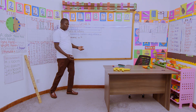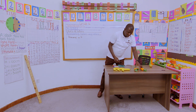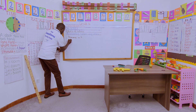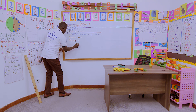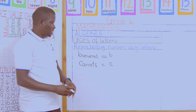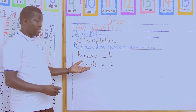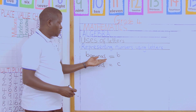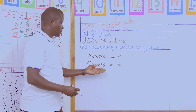Also with me are some carrots. Let us use a letter to represent the carrots. Carrots can also be represented by a letter — we can choose any letter. Let us choose letter C to represent carrots. So letter B we have chosen to represent bananas, and letter C to represent carrots.